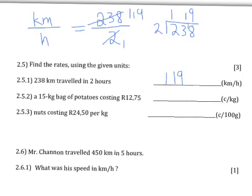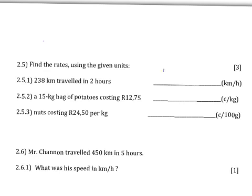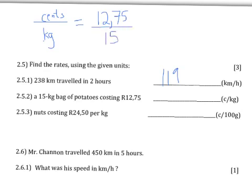For 2.5.2, we have a 15-kilogram bag of potatoes costing R12.75, but the rate required is in cents per kilogram — so the monetary part comes first, then the weight. We want it as cents per kilogram. What we currently have is 12 rand 75 cents for 15 kilograms.